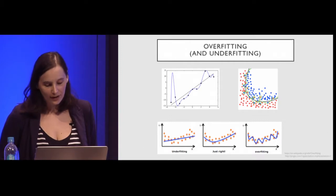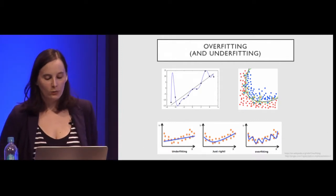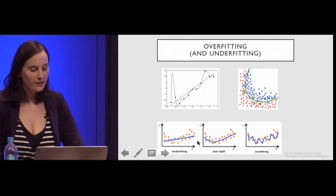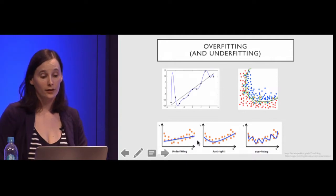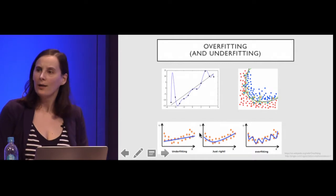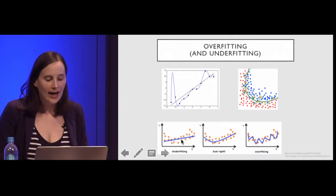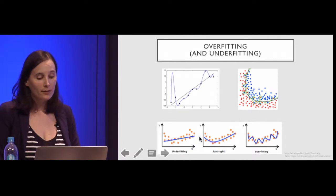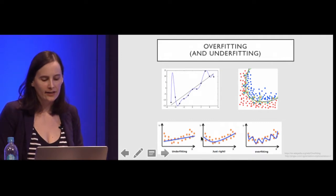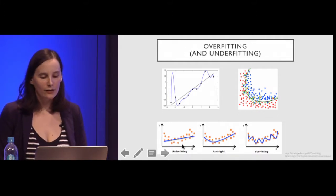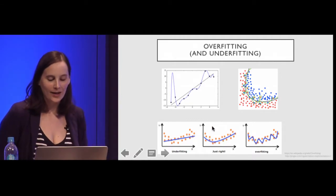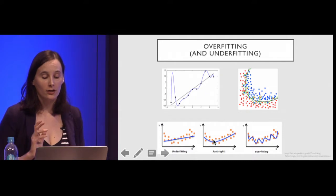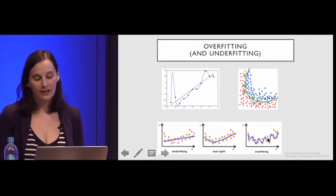A good rule of thumb: you want your model to look like the data, but not too much like the data. On the left we can see underfitting — using a model that's too simple. The data has a curve to it but you've decided to fit a linear model. That's bad not only because your model isn't as good as it can be, but also because it's biased — over here you're systematically making predictions that are too low, and over there too high. Underfitting is arguably just as bad as overfitting.